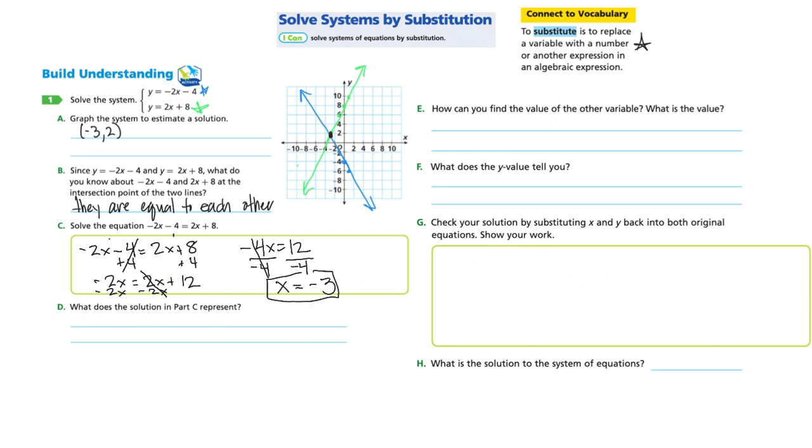So I know that my x coordinate has to be negative 3. That's what that solution tells us, that the x coordinate for my ordered pair where the point of intersection is negative 3.